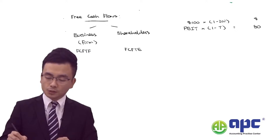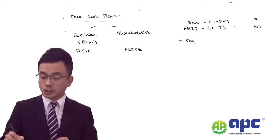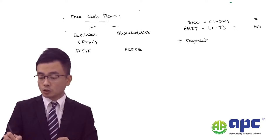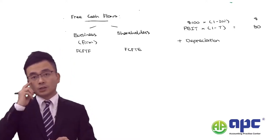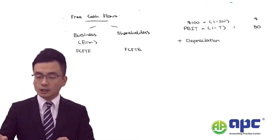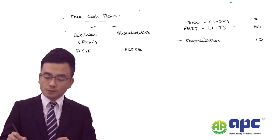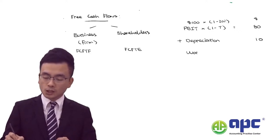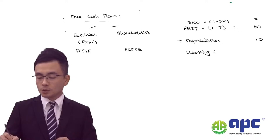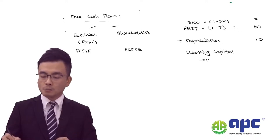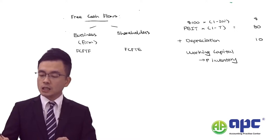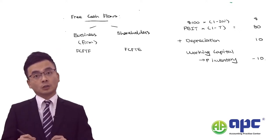We then add back depreciation on property, plant and equipment — because this is non-cash, let's say $10. We also need to adjust for working capital — for example, an increase in inventory because we need to spend money buying inventory, let's say minus $10.